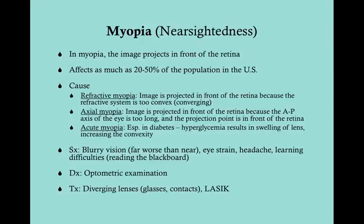Myopia, or nearsightedness, is where the image projects in front of the retina. Normally the image is projected onto the retina, but in myopia it's projected in front of it, so when it reaches the retina it's out of focus and distorted. This affects as much as 20 to 50% of the U.S. population. Not everyone is myopic to the same degree - some are only slightly myopic and may just notice occasional headaches, while others are so myopic they can't see the chalkboard or their toys.